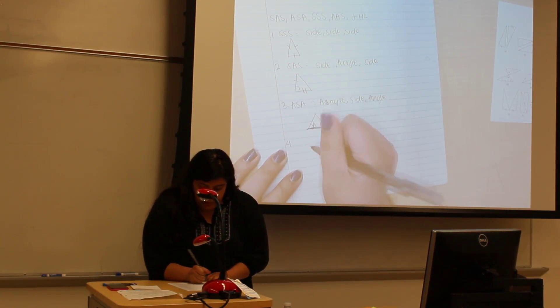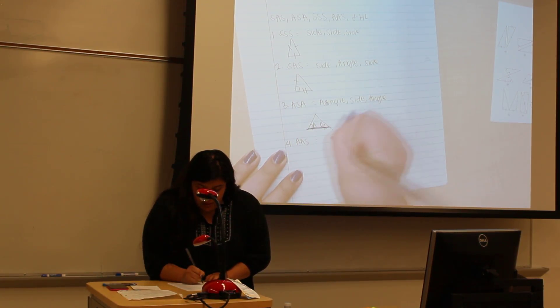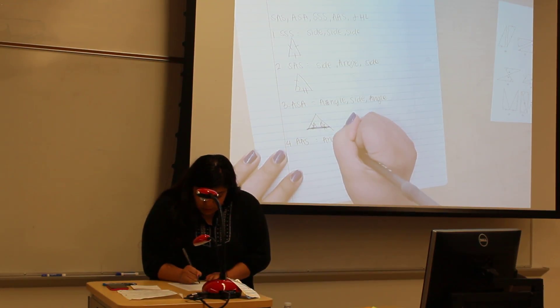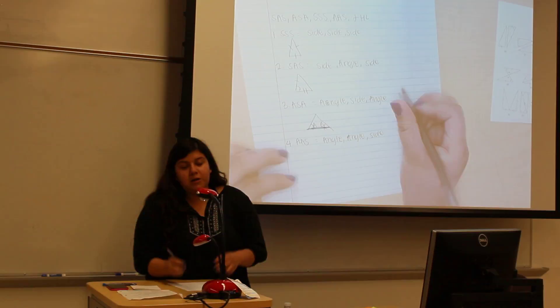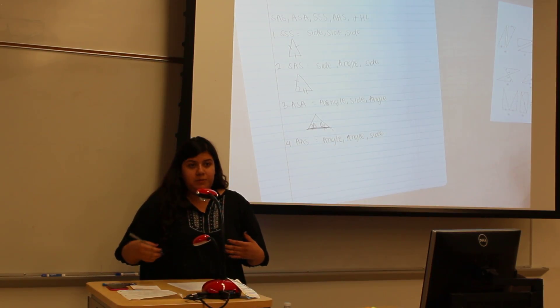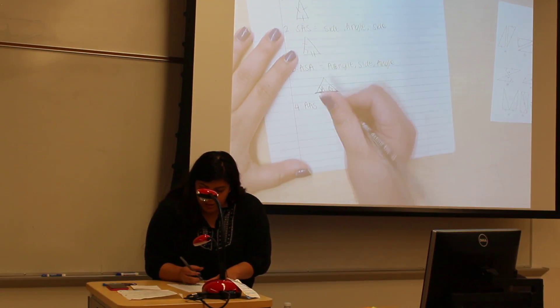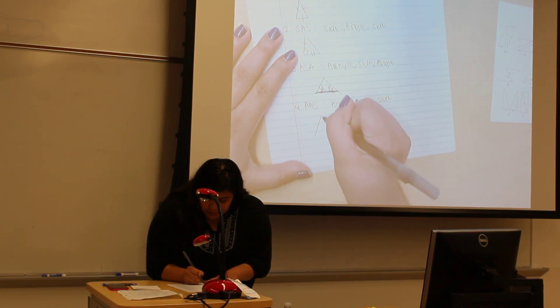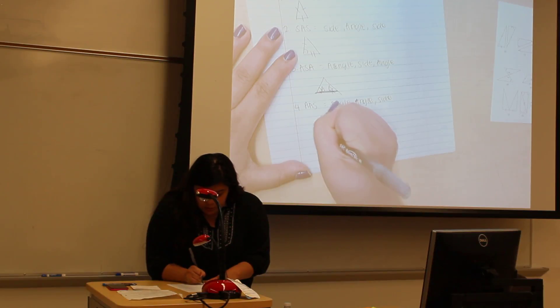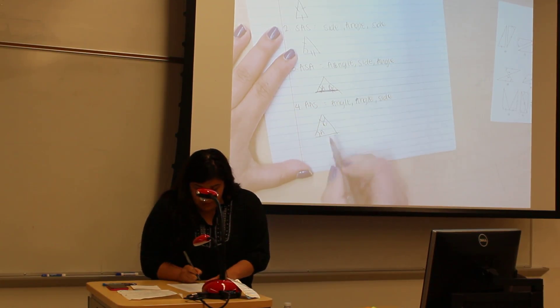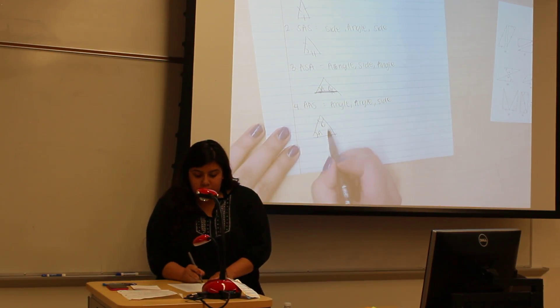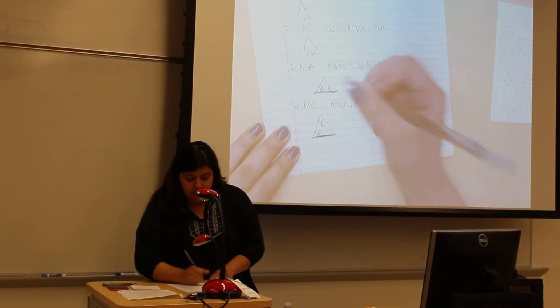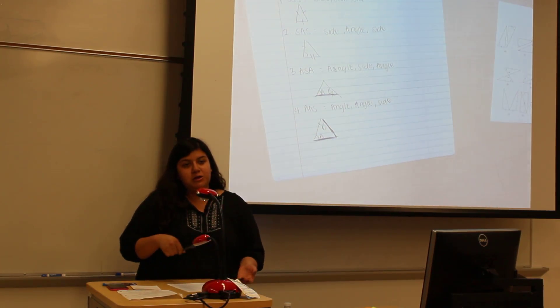Number four is angle-angle-side—the same, two angles and one side being corresponding. But for this one, it's the opposite side of the angles being equal. The side that's going to be equal with the other triangle is going to be either this one or this one, as long as it's not touching the angles.